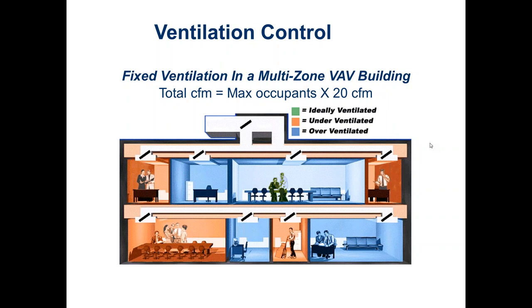On a VAV-type zoning system, we'd have dampers in all particular zones. What happens is we still ventilate for the maximum number of occupants at all times. There are two problems: if rooms are unoccupied, we're still ventilating them because code told us to. And second, as we slow the VFD down on a VAV system, we inadvertently bring less outside air into the intake, so we could be underventilating at certain times. In this drawing, spaces in blue are overventilated, orange is underventilated — very few spaces get the exact amount of air they need.